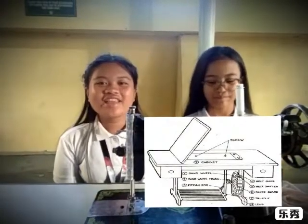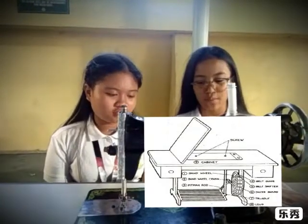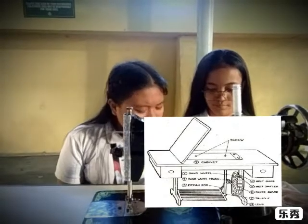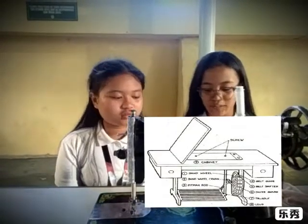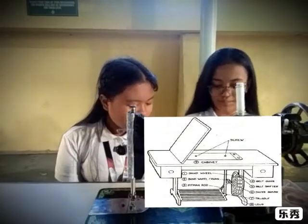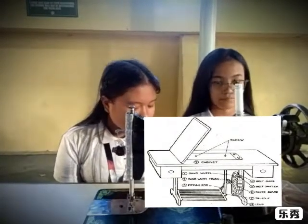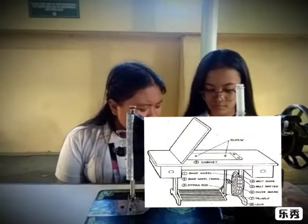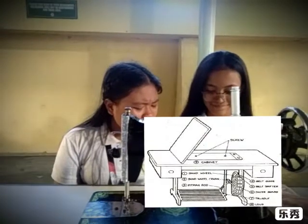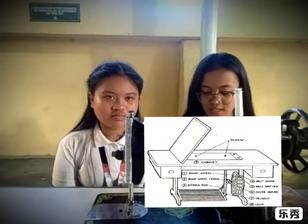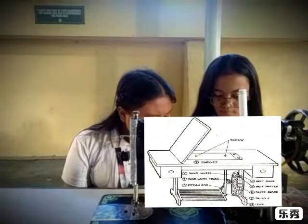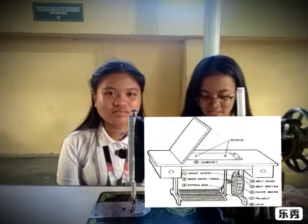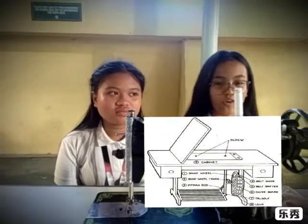I'm Ate Aliana and I'm Ate Mara. We will discuss the lower parts of the lockstitch sewing machine. Band wheel leads the balance wheel through the belt connection. Band wheel crank moves the band wheel. Pitman rod holds the treadle to the band wheel crank. Belt guide holds the belt in place. Belt shifter removes the belt from the wheel. Dress guard protects the dress from the wheel. Treadle is where the feet are stationed to drive the band wheel. Legs support the cabinet of the machine.